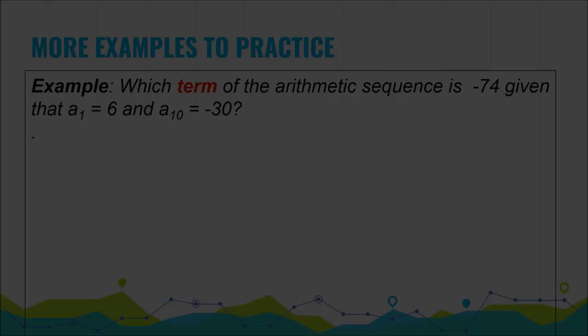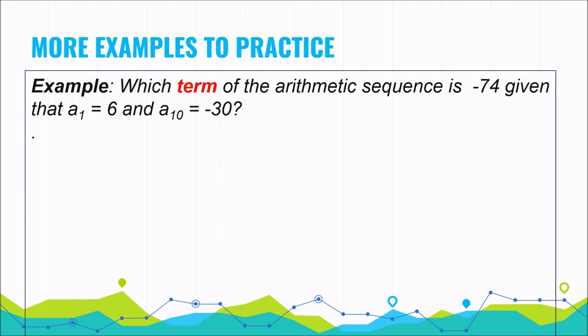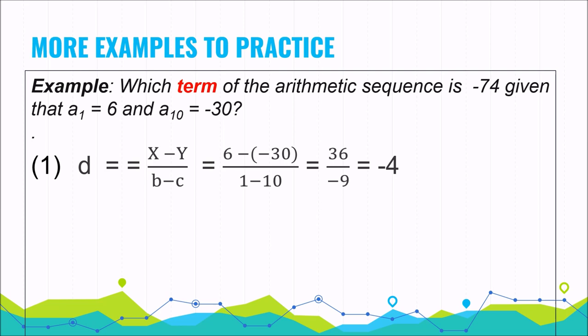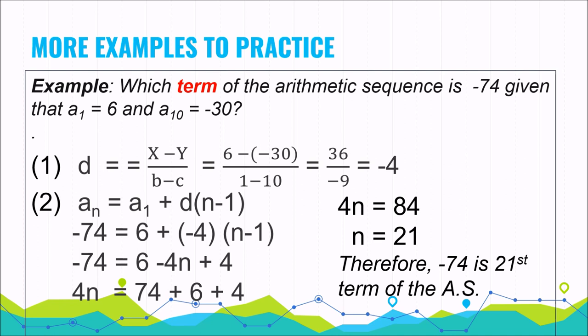Another example: which term of the arithmetic sequence is negative 74, given that a sub 1 is 6 and a sub 10 is negative 30? Pause the video and try to solve this problem. The common difference is negative 4 and the value of n is 21. Therefore, negative 74 is the 21st term. Did you get it correctly? Excellent job, and for others, go back and compare your solution and try to simplify your work — you can do it.